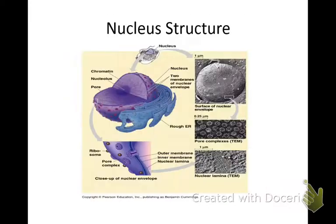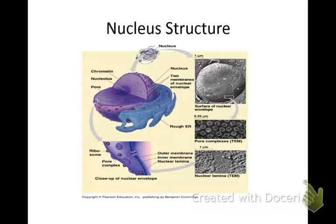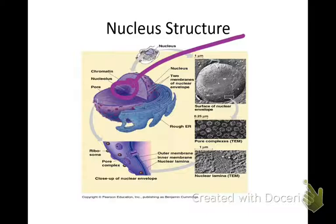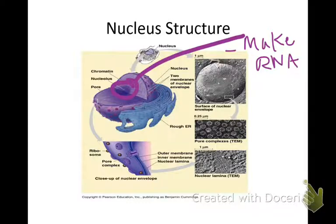Inside the nucleus you'll see the nucleolus. That's where the RNA is made — that's where DNA would make the RNA. The site of RNA synthesis means 'make': you make a cheap copy of your DNA, and we call that RNA. The nucleolus is also responsible for helping make ribosomes. So the nucleolus makes RNA and ribosomes. Ribosomes are actually made up of RNA.